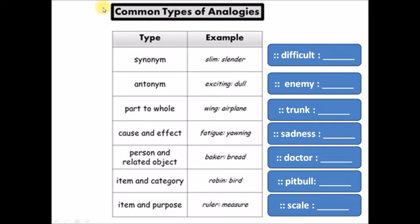And lastly, another type of analogy is when we have the item and the purpose for that item or how is that item used. We have here ruler is to measure. What's the relationship? The ruler is used to measure. So once we identify the relationship, we can complete the analogy. Ruler is to measure as scale is to. What is a scale used to do? A scale is used to weigh. Ruler is to measure as scale is to weigh.